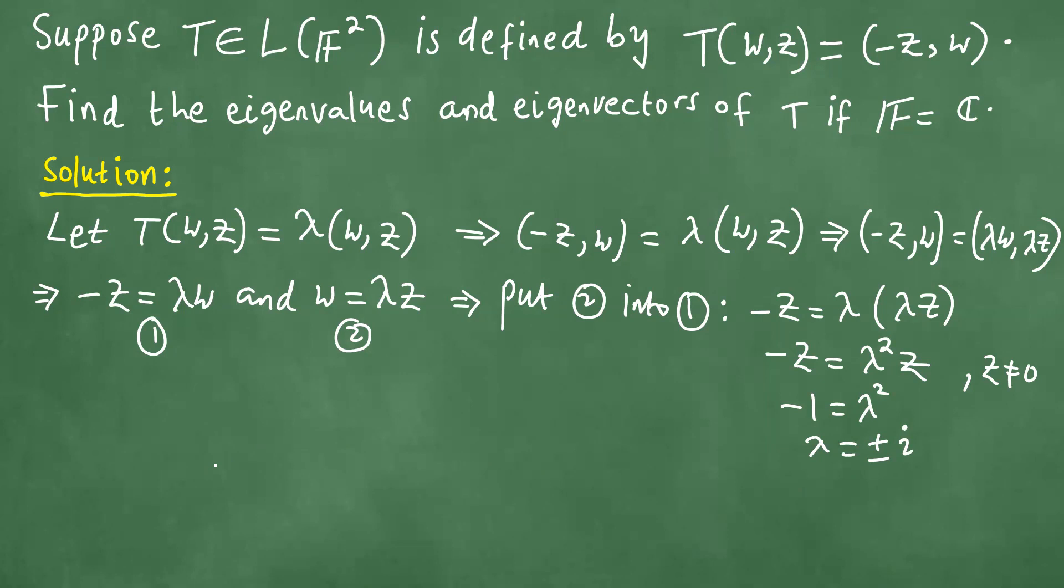Plus or minus i. These two are actually the eigenvalues. It remains for us to find the eigenvectors.